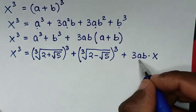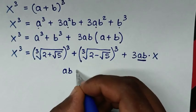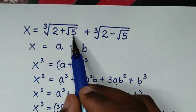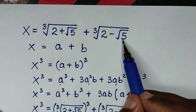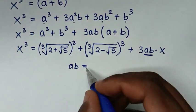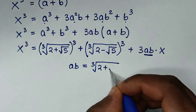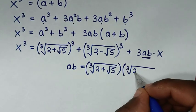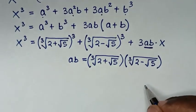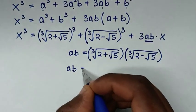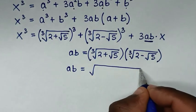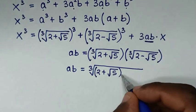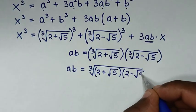Next we calculate a times b. Since a is cube root of 2 plus square root of 5, and b is cube root of 2 minus square root of 5, ab equals the cube root of (2 plus square root of 5) times (2 minus square root of 5).